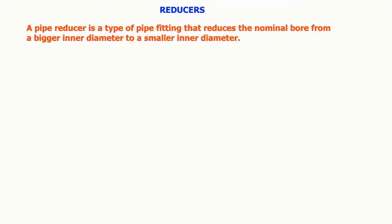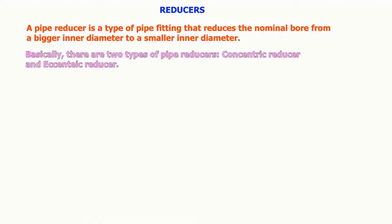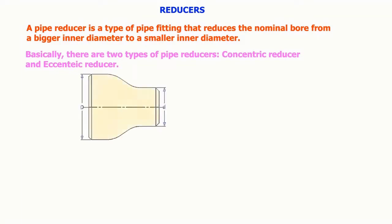A pipe reducer is a type of pipe fitting that reduces the nominal bore from a bigger inner diameter to a smaller inner diameter. Basically, there are two types of pipe reducers: concentric reducer and eccentric reducer.